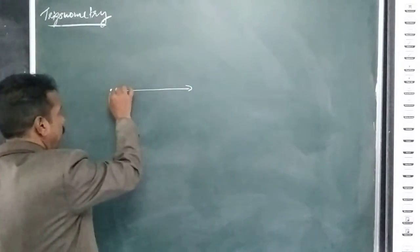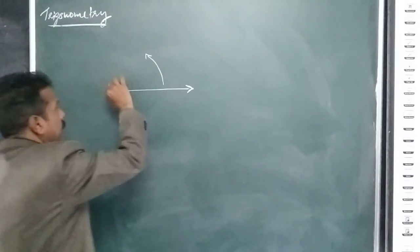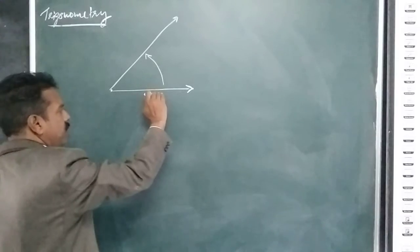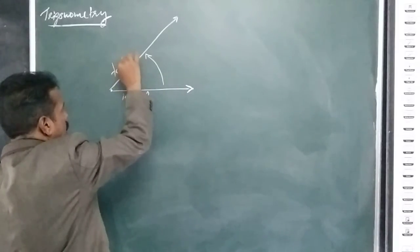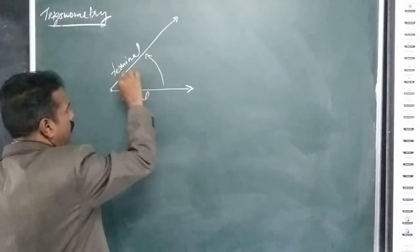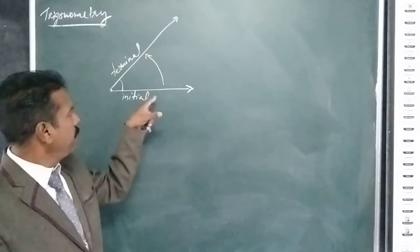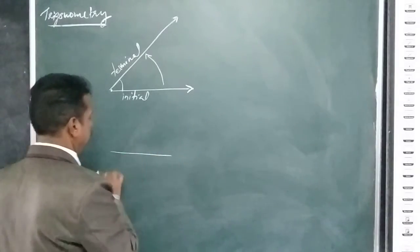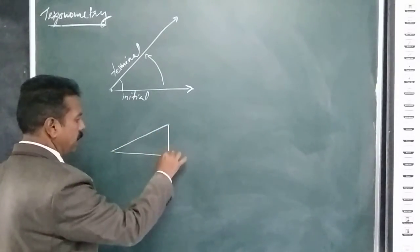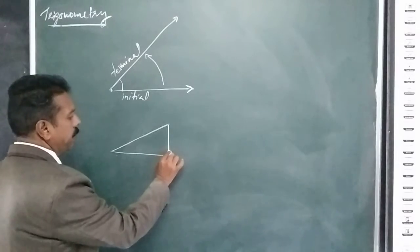Suppose a ray has an endpoint, and if it is rotating in the anti-clockwise direction from its initial position to the terminal position, we will get an angle. The angle is formed by the rotation of a ray about that point from its initial position to the terminal position. If you drop a perpendicular to the initial position, you will get a right-angled triangle.